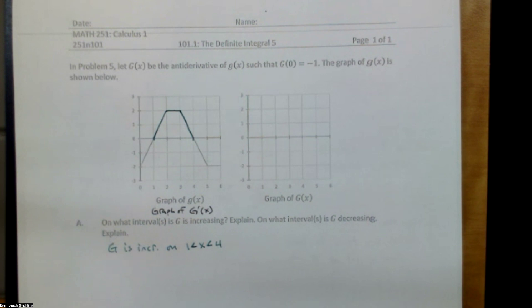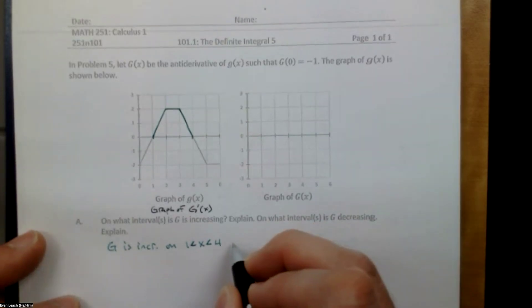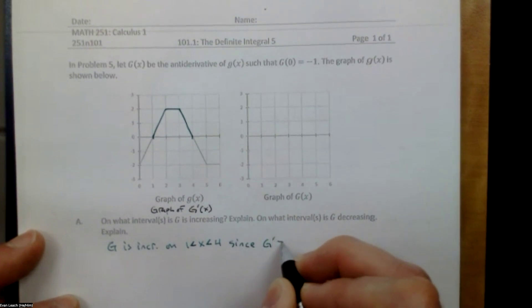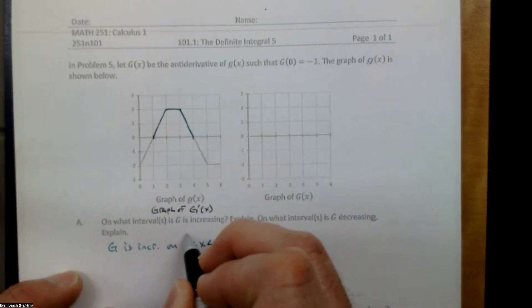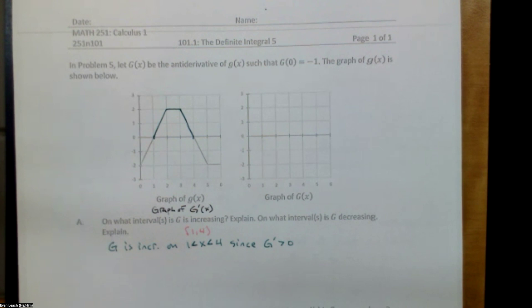The reason we say capital G is increasing on the interval from one to four is that capital G prime, which is little g, is positive on the interval from one to four. We can also write this interval in interval notation: x is between one and four, not including one and not including four. We can write this as (1, 4) in interval notation — that looks like coordinates, but it's not, because G is increasing over an interval, not a single point.